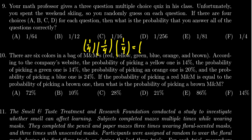So the answer is going to be one fourth to the third power — that is one over four cubed. Four cubed is 64, so you get one over 64. That is the chance of getting 100 percent on this quiz from random guessing alone. So we see the answer is A.